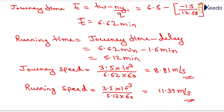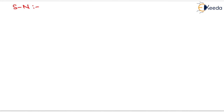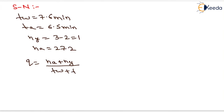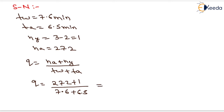Now solving for the south-to-north direction: TW equals 7.6 minutes, TA equals 6.5 minutes, NY equals 3 minus 2 equals 1, and NA equals 272, given by the observer of the opposite side. Flow Q equals NA plus NY divided by TW plus TA. Substituting NA as 272, NY as 1, TW as 7.6, and TA as 6.5, Q comes out to 19.36 vehicles per minute.